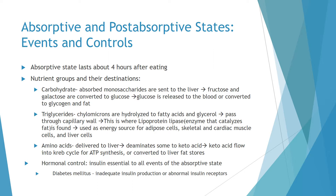Triglycerides are used as a source for adipose cells, skeletal and cardiac muscle cells, and liver cells. Amino acids are delivered to the liver; some are deaminated to keto acids. Keto acids flow into the Krebs cycle for ATP synthesis or are converted to liver fat stores. Hormonal control: insulin is essential to all events of the absorptive state. Diabetes mellitus is inadequate insulin production or abnormal insulin receptors.